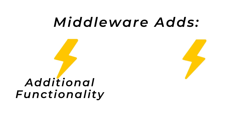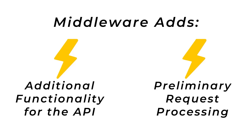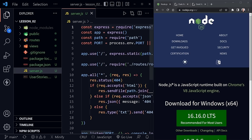What is middleware? Middleware is one or more functions placed in the path of requests received by our back-end API. Middleware can add additional functionality and can also apply some preliminary processing to requests before they get to the controller where request processing will be completed. We'll be adding three types of middleware today: built-in middleware, custom middleware, and third-party middleware.